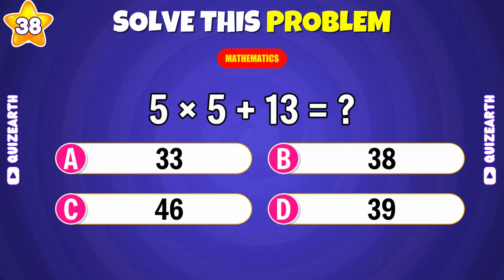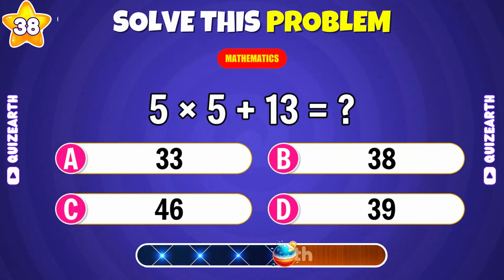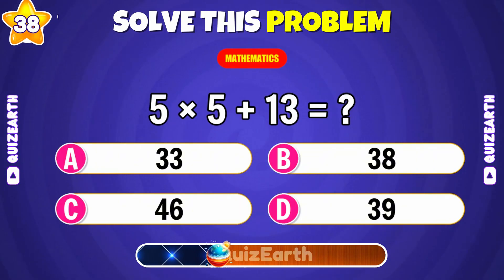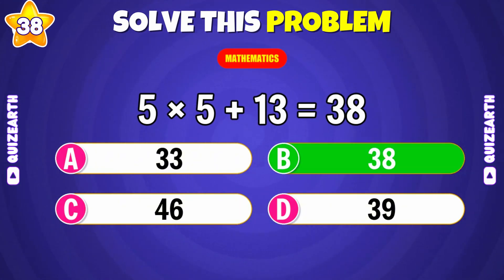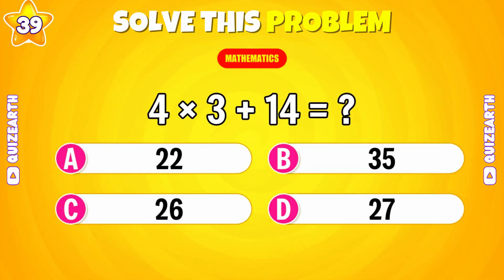Here we go. 5 times 5 plus 13? Impressive. The answer is 38.